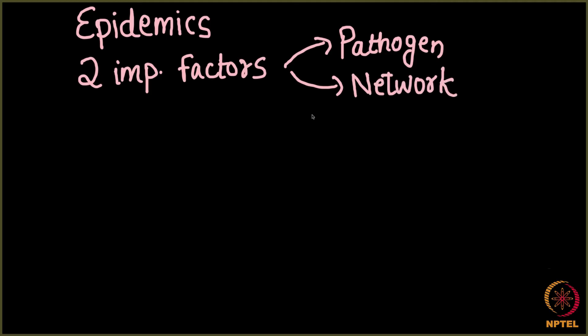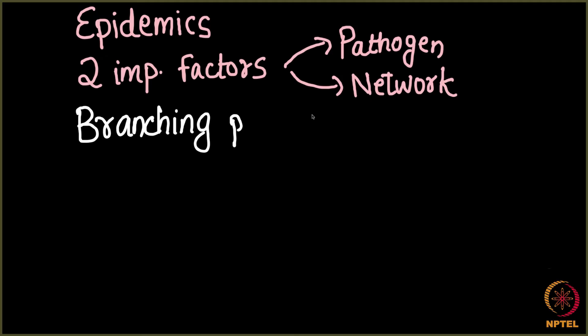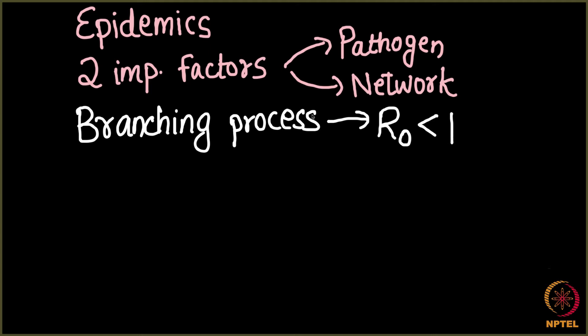After that, we looked at a very simple process for modeling the spreading of a contagion, which is the branching process. One very interesting concept we looked at in the branching process was the reproductive number R0. We saw that when R0 is less than one, the disease dies away with a probability equal to one.